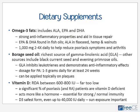Omega-3 fats are quite good for a variety of inflammatory and arthritic conditions. These include ALA, EPA, and DHA compounds, which are strongly anti-inflammatory and aid in tissue repair. EPA and DHA are found in fish oils, while ALA is primarily in flaxseed, hemp, and walnuts. At least 1000 milligrams two to four times daily would help reduce both skin psoriasis and PA.